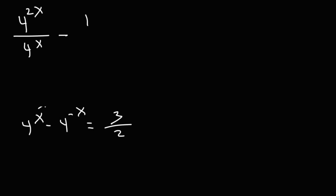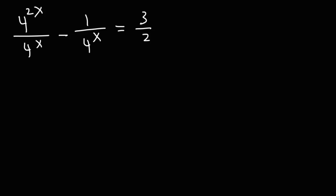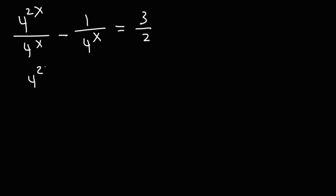So we now have minus 1 over 4 to the x, and that's going to equal 3 over 2. Notice that the denominators of these two fractions are the same. Because of that, we can combine them into a single fraction: 4 raised to the 2x minus 1 over 4 raised to the x, and that's going to equal 3 over 2.